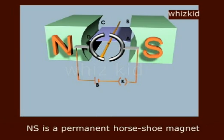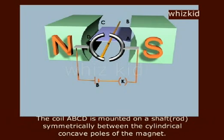NS is a permanent horseshoe magnet. The coil ABCD is mounted on a shaft symmetrically between the cylindrical concave poles of the magnet.